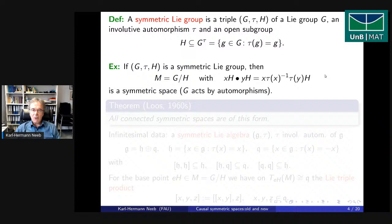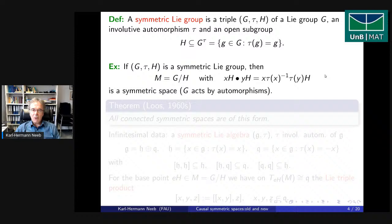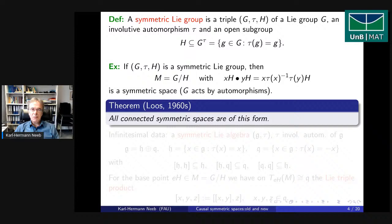This class of symmetric spaces is universal. Every connected symmetric space is of this form. The key point is that the automorphism group of a symmetric space is always a Lie group and acts transitively on the space when it is connected. The main source of automorphisms comes from the reflections sigma_X and their products.